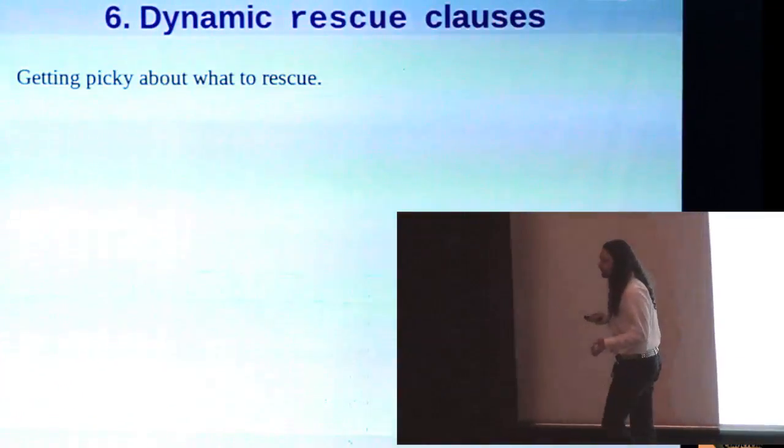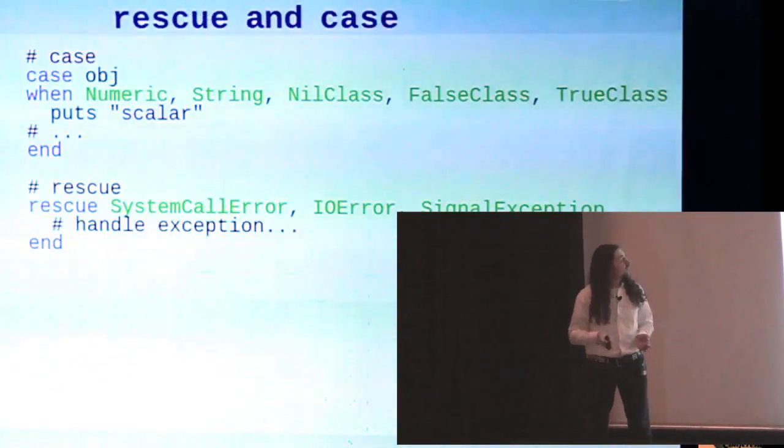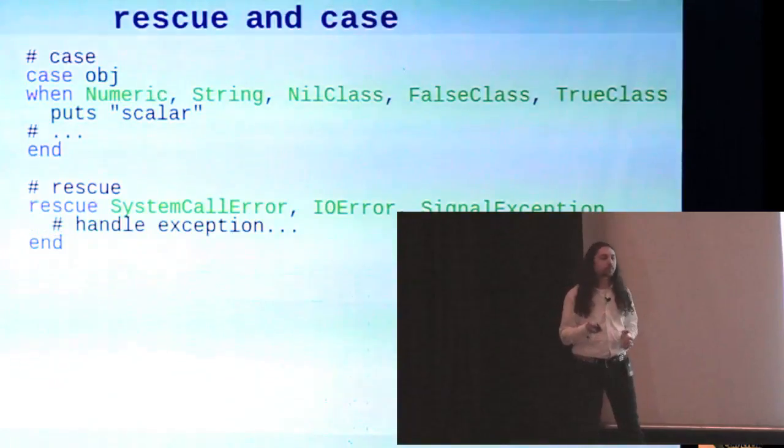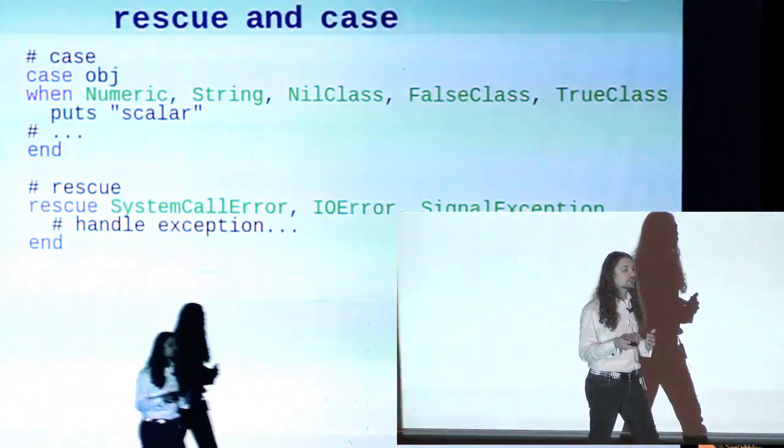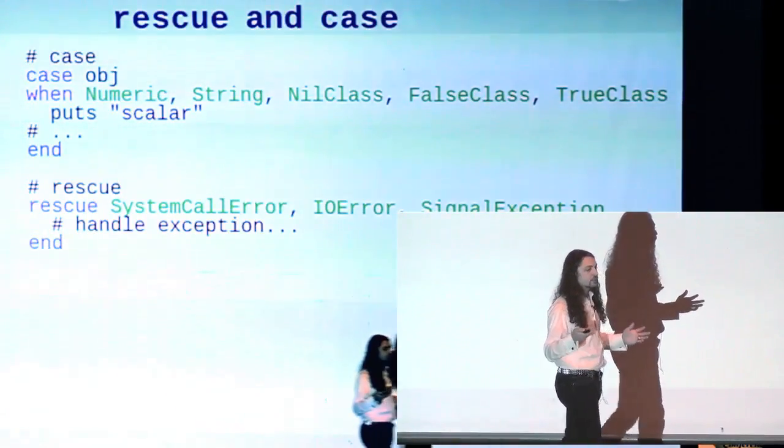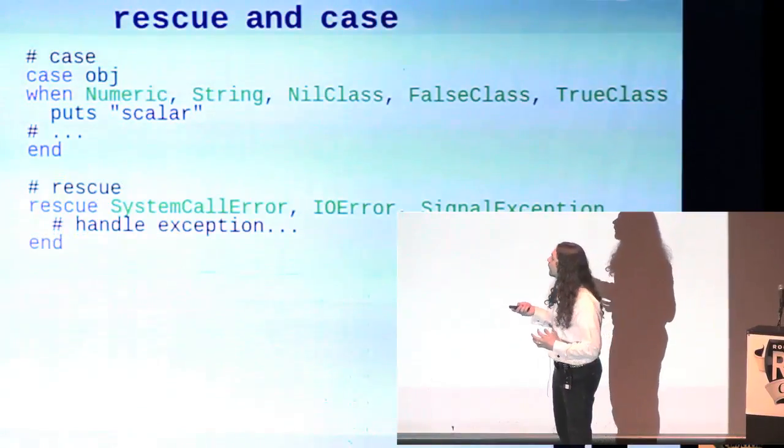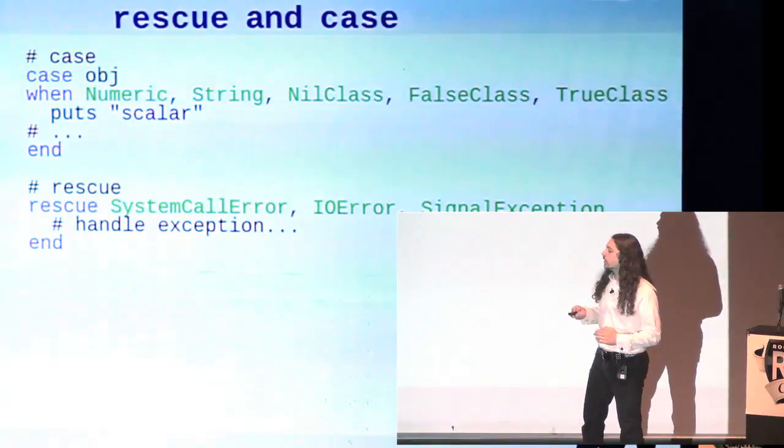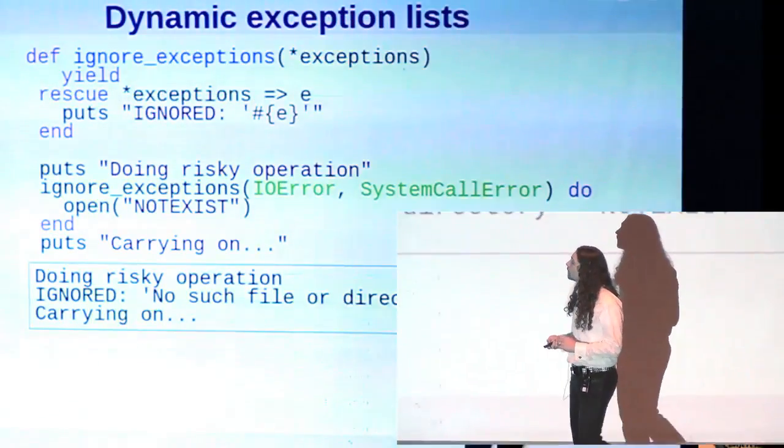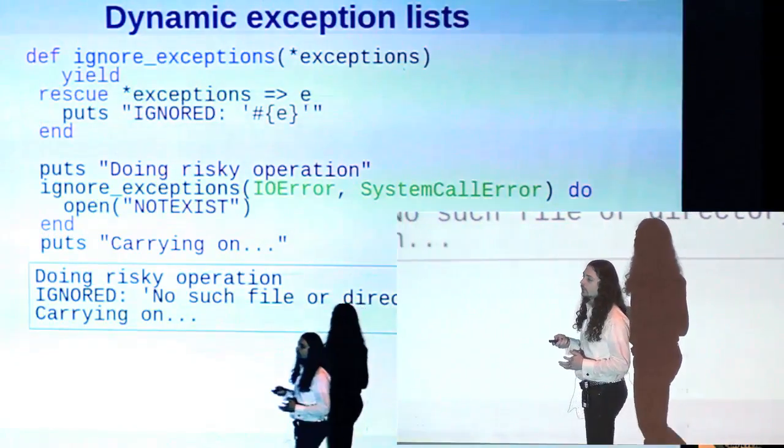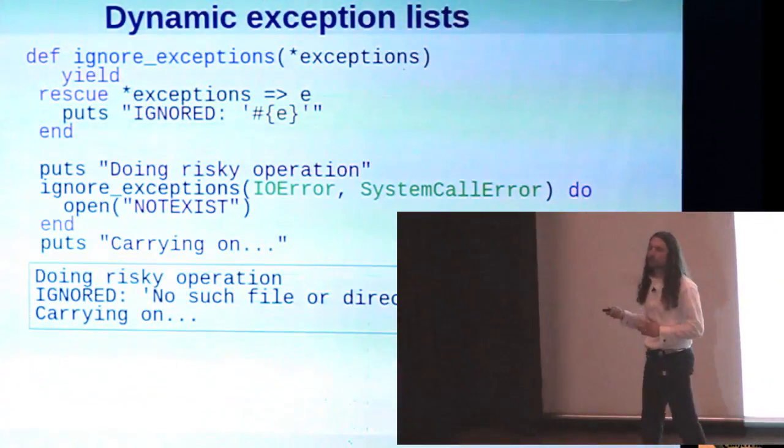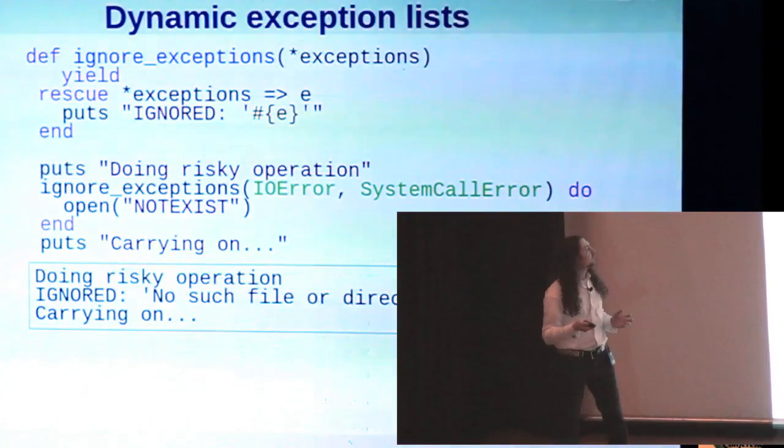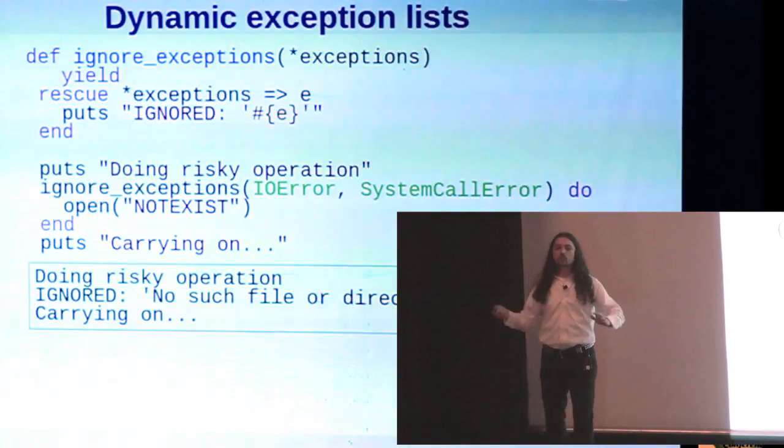So when you look at the way that Ruby rescue clauses are structured, you might see something kind of familiar. It looks a lot like Ruby case statements. You have a list, a single class to match on, or you have a list of classes to match on. And this is not a coincidence. They are actually implemented very similarly. And among other things, what this means is, just like with case statements, we don't have to have the list of things to match hard-coded. So if we want to, we can expand that list at runtime.